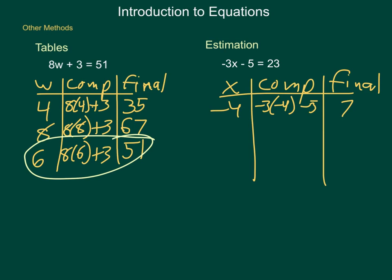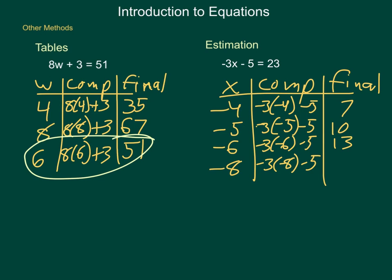What if I went to negative 5? I have negative 3 times negative 5 minus 5. First two gives me 15, minus 5 is 10. Negative 6: negative 3 times negative 6 minus 5 gives me 18 minus 5 is 13. I'm getting closer. Let's jump down to negative 8. Negative 3 times negative 8 is positive 24, minus 5 is 19. Much closer. Let's try negative 9. Negative 3 times negative 9 minus 5 gives me 27, minus 5 is 22. I'm very close now.